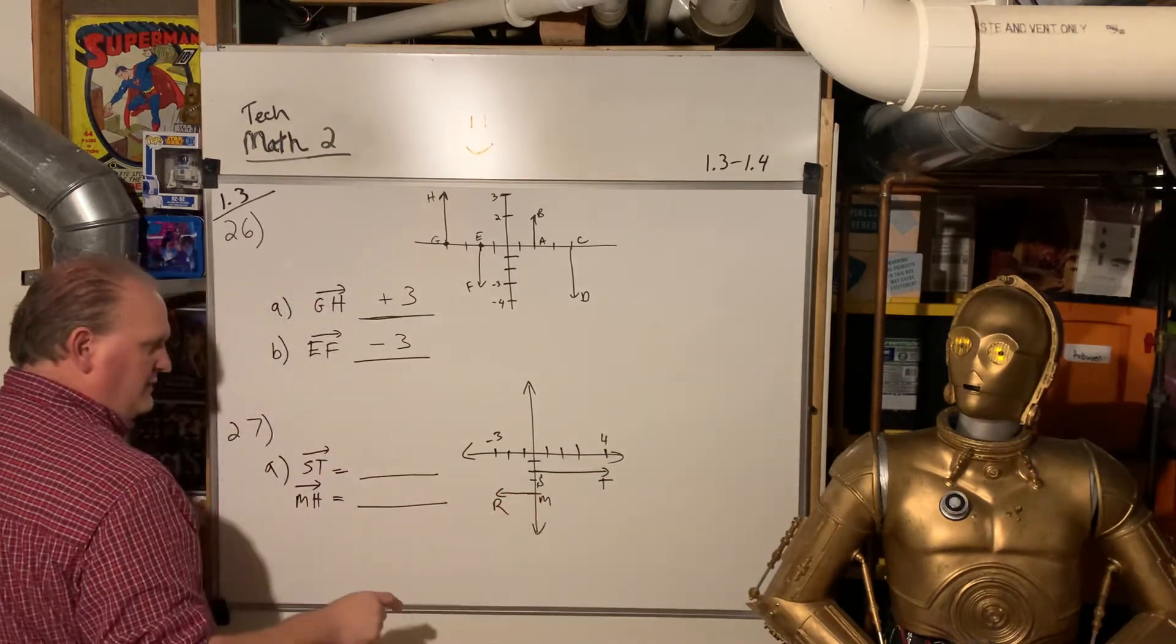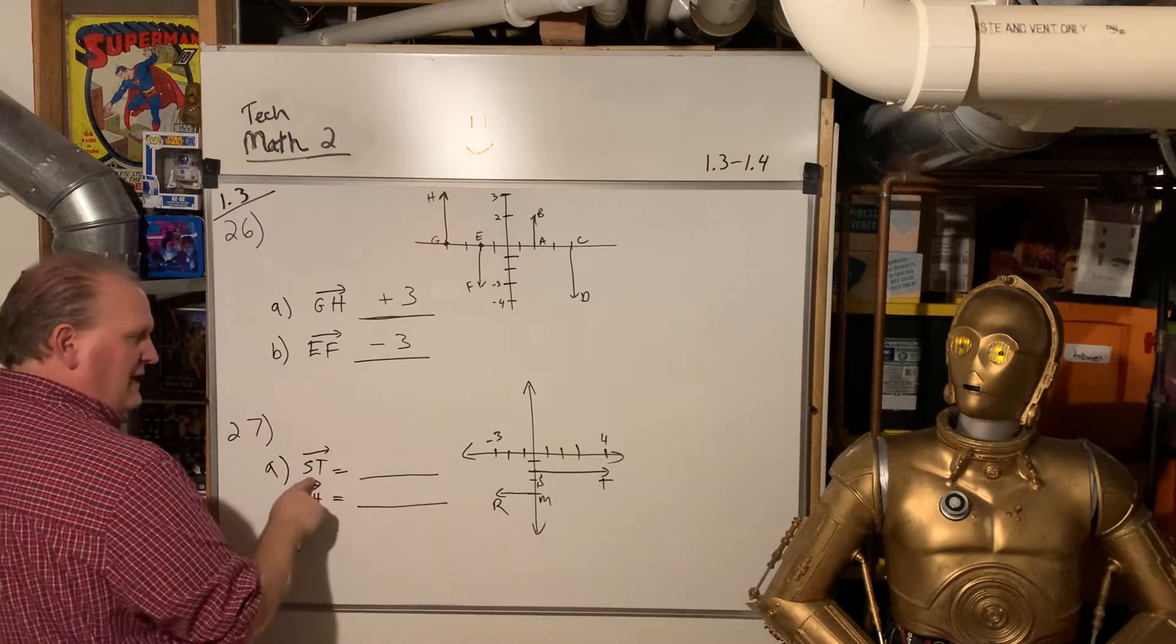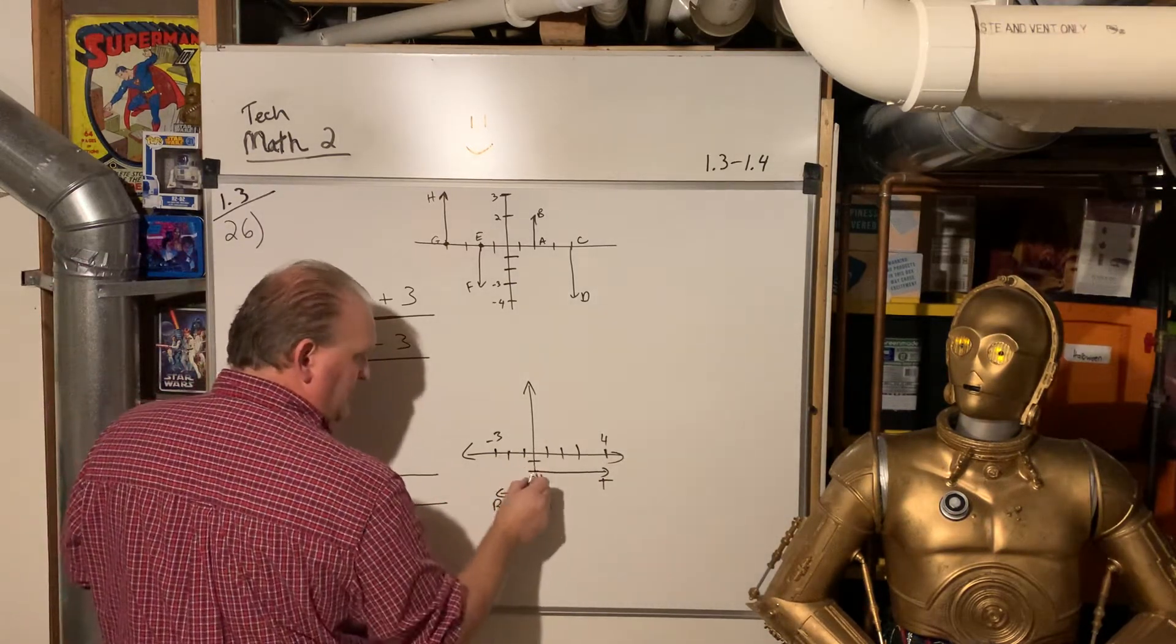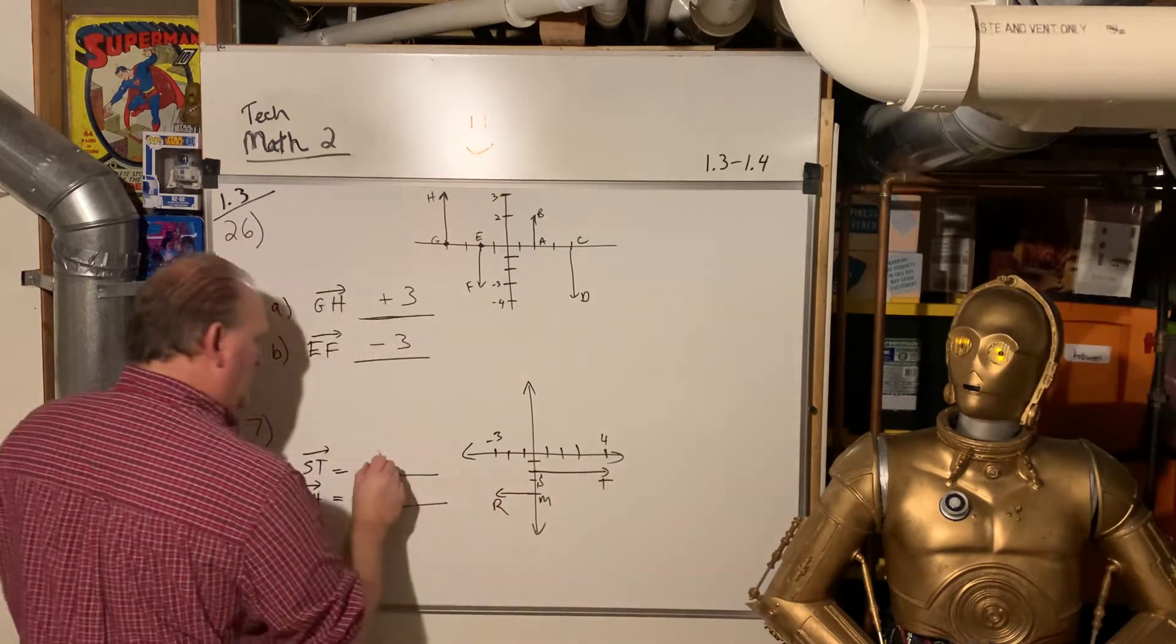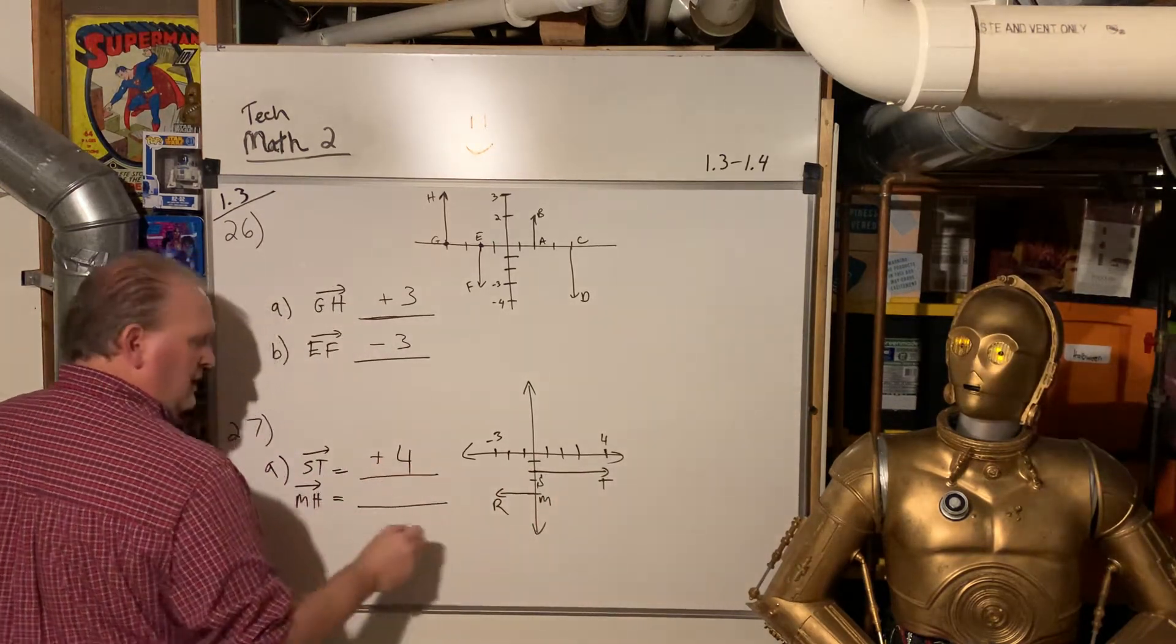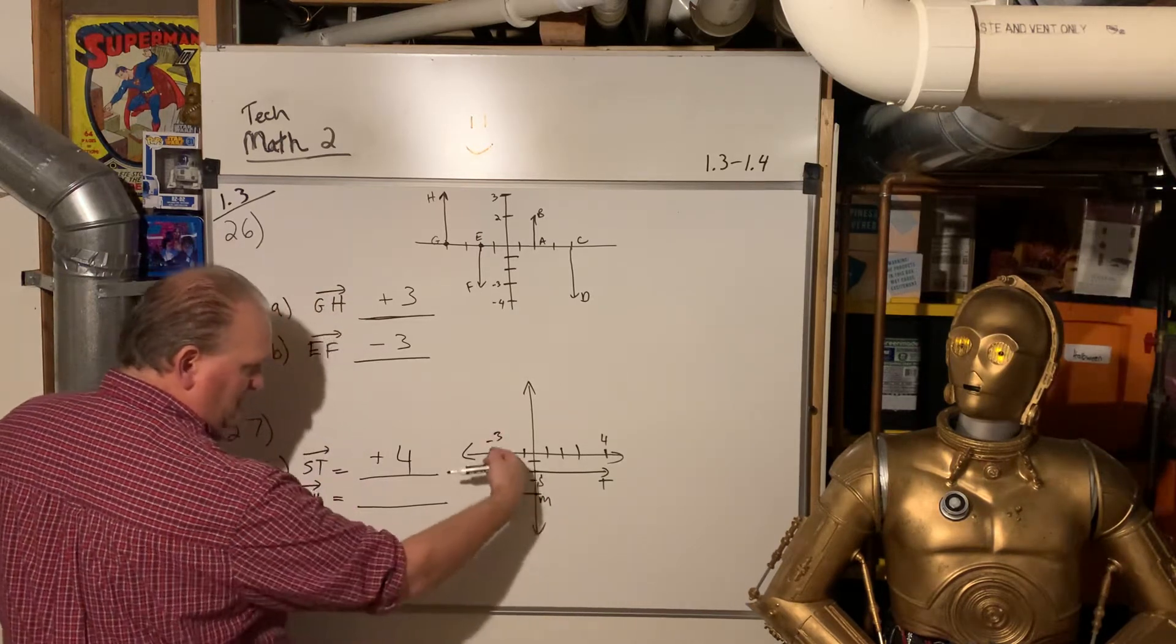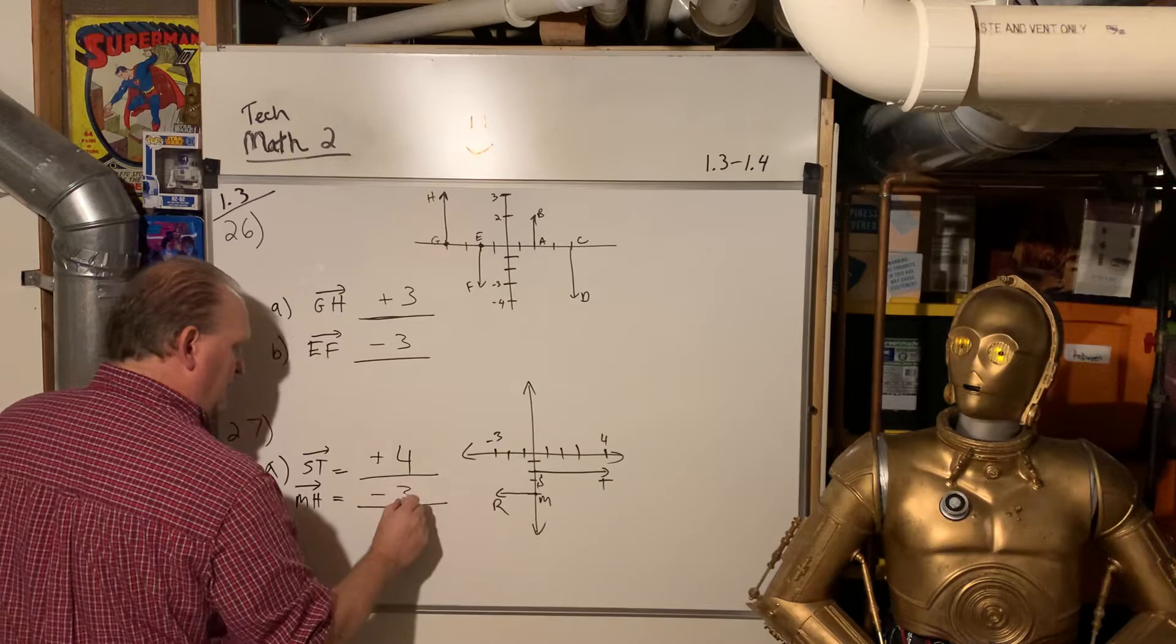We can do it with right and left also. They ask for ST. That starts at 0 on the x, and then goes to positive 4. We'll call that plus 4. And MH, that starts at 0 on the x, but goes to the left. So it's going negative 3.